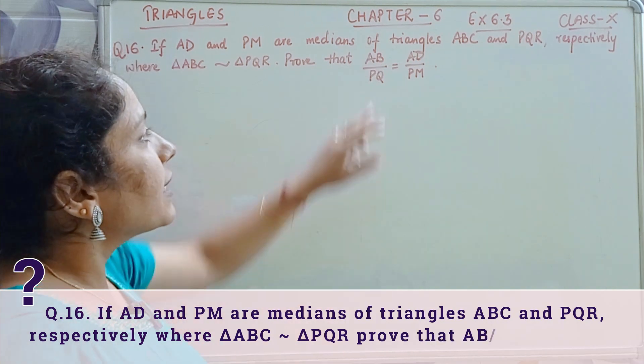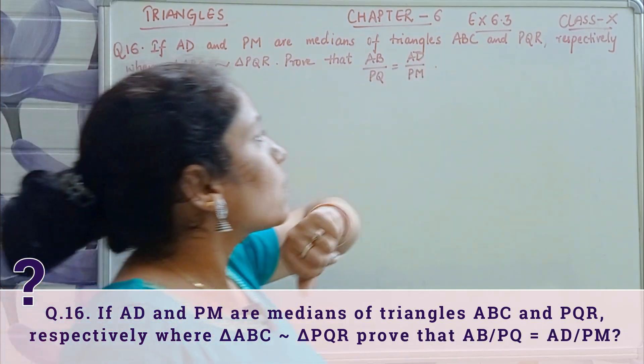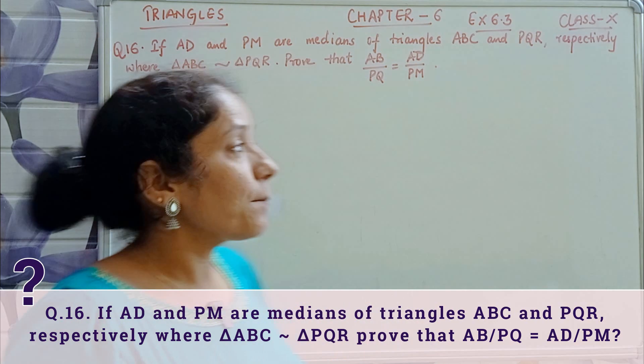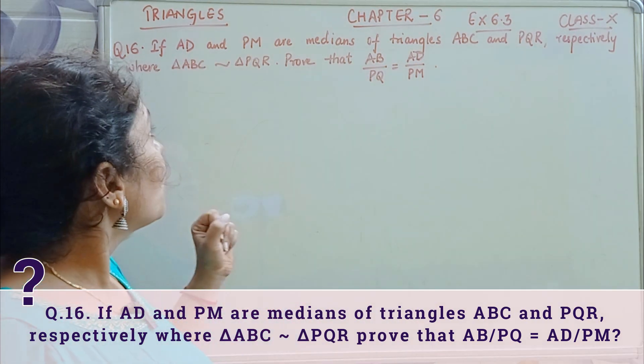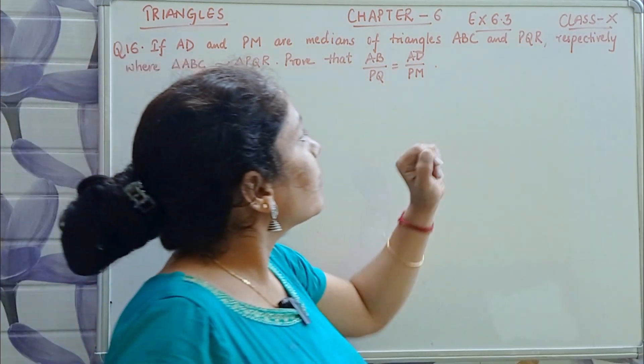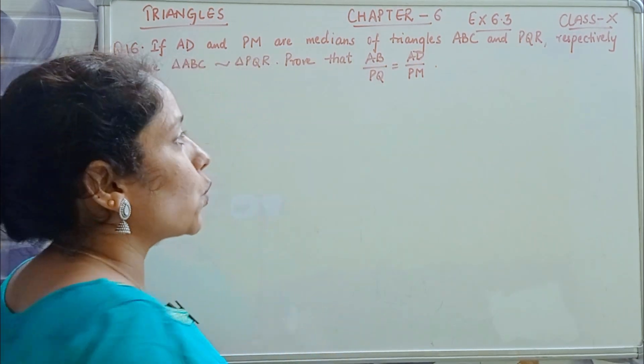Prove that AB by PQ is equal to AD by PM. AD and PM are medians of triangles ABC and PQR respectively.